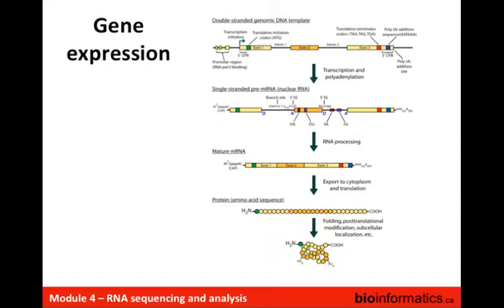The main point of showing this is to note that we're really focusing on this type of molecule. For the most part, RNA-seq libraries — at least most of the ones I've seen — are generated from polyadenylated mRNA.